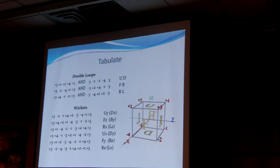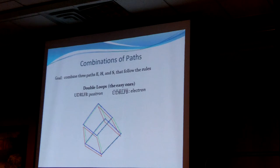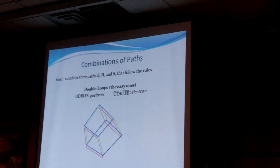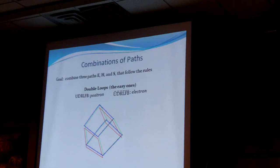I tabulated all the possibilities. It turns out there are three double loops and six wickets — six ways to orient them. Those are the only ways you can do it. Now the question is what are the ways to do combinations of paths. One combination is to have all double loops — all three colors, where red represents the electric field, blue represents the magnetic field, and green represents the Poynting field S.